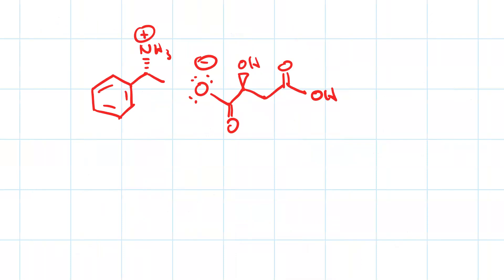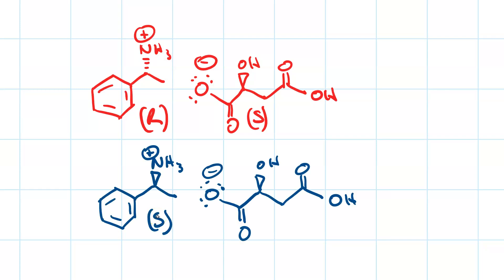So one of the salts you get is R on the ammonium and S on the 2-hydroxy-succinate. The other salt you get is S on the ammonium and S on the 2-hydroxy-succinate.